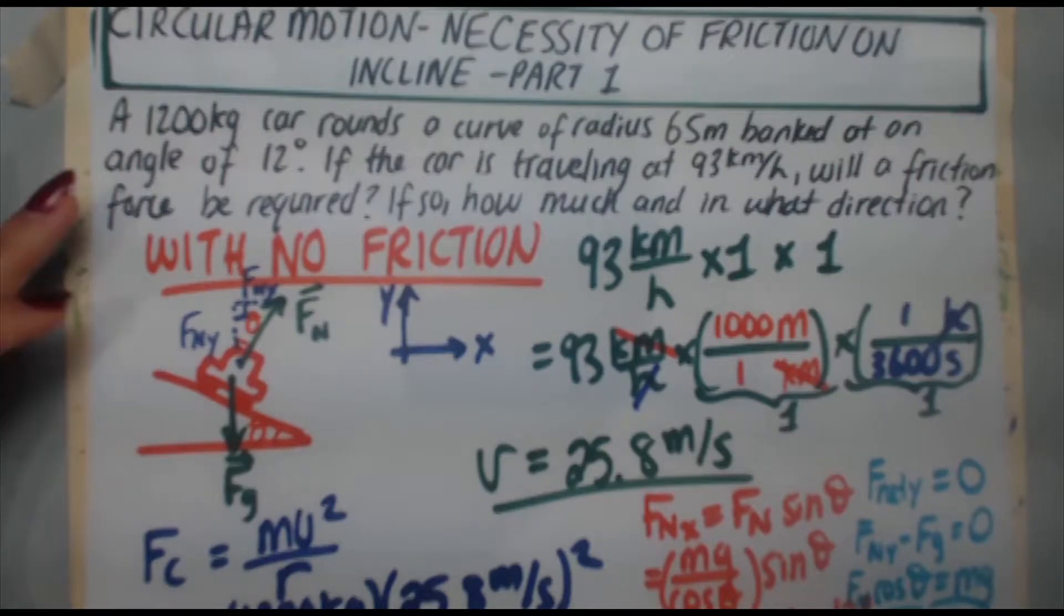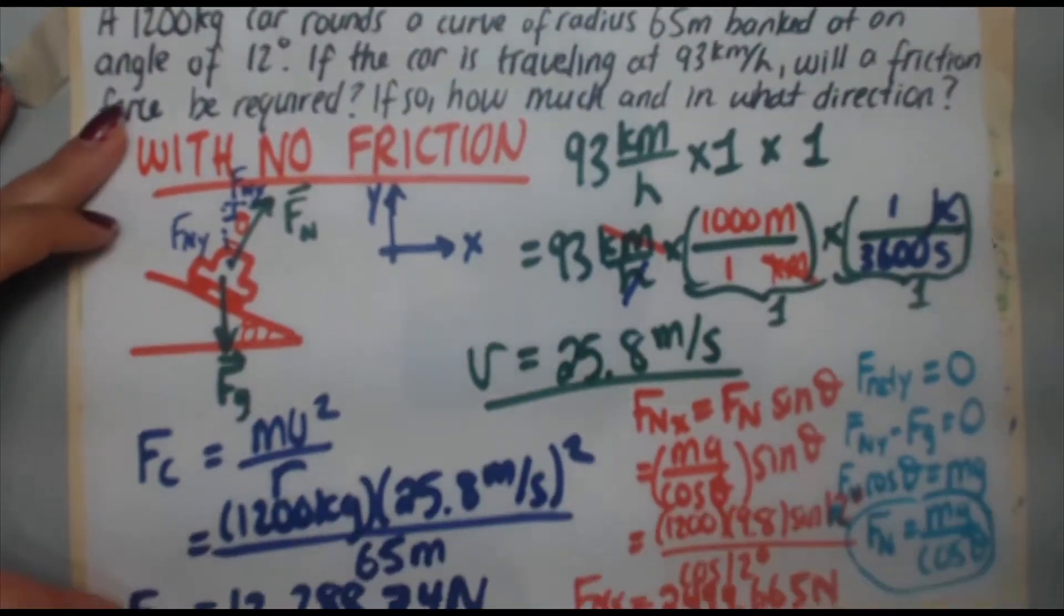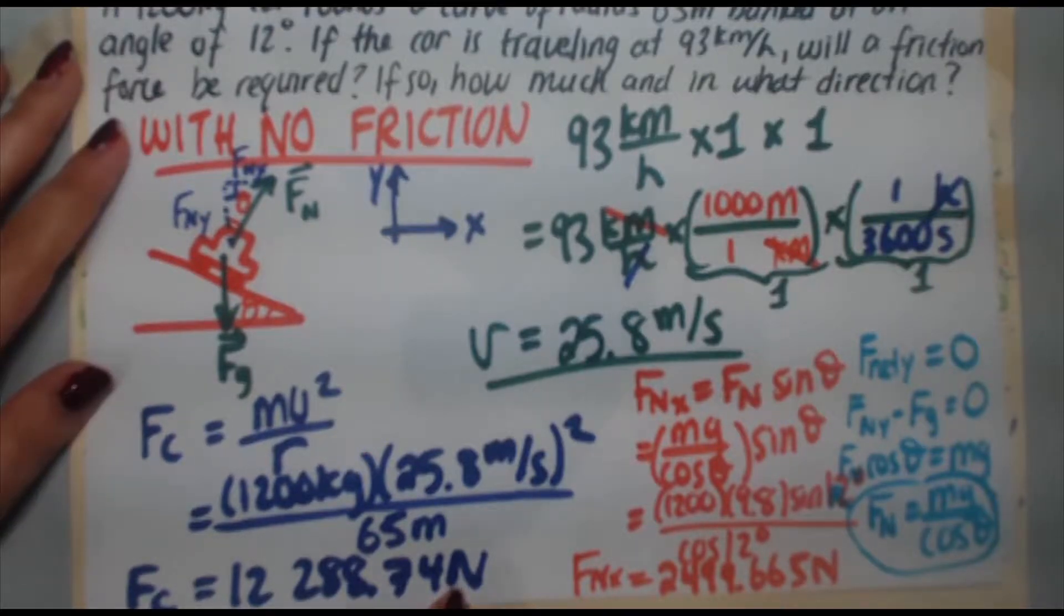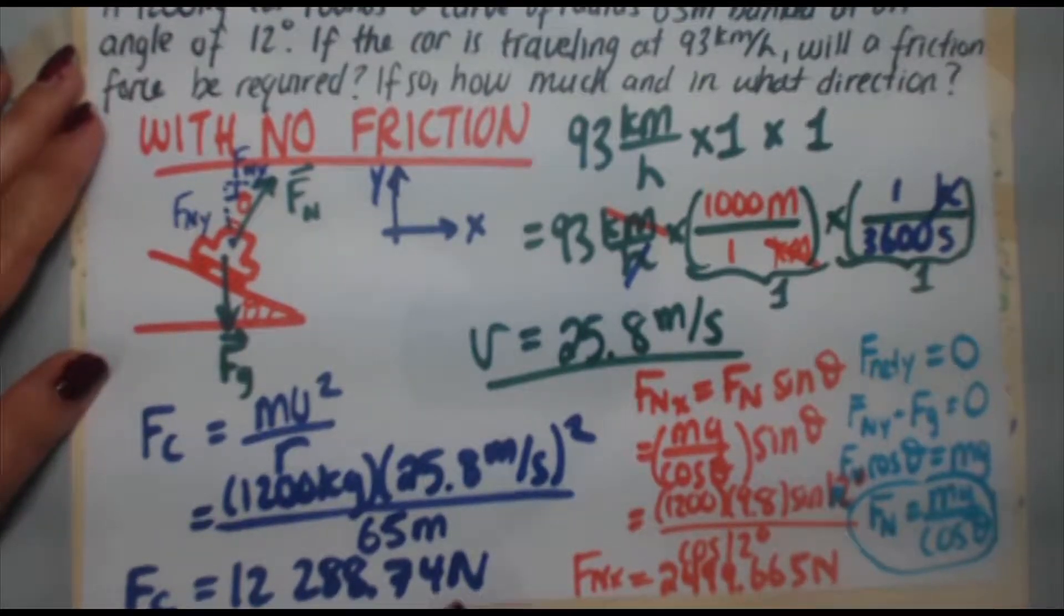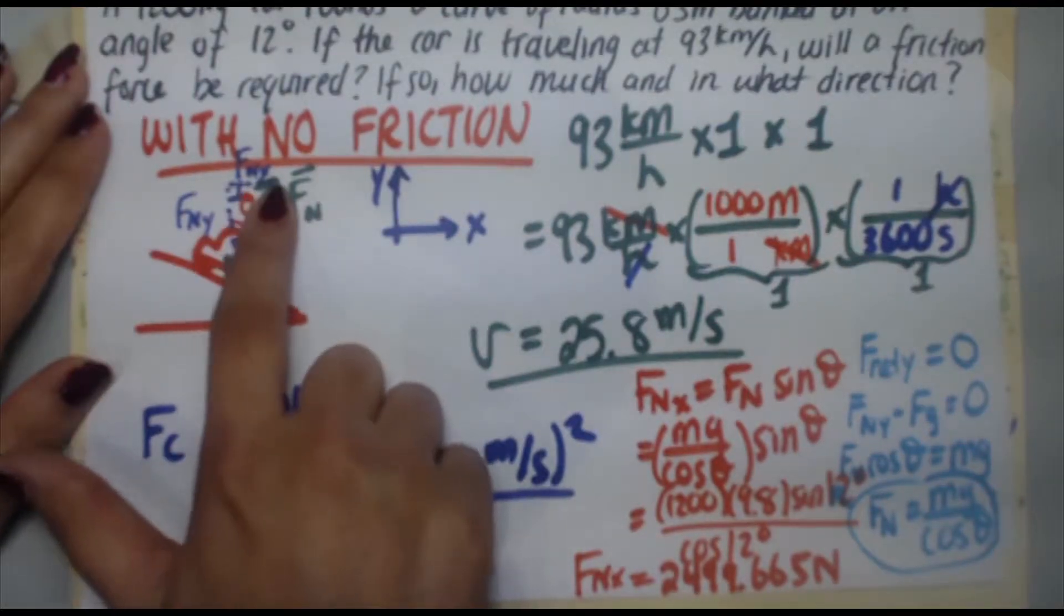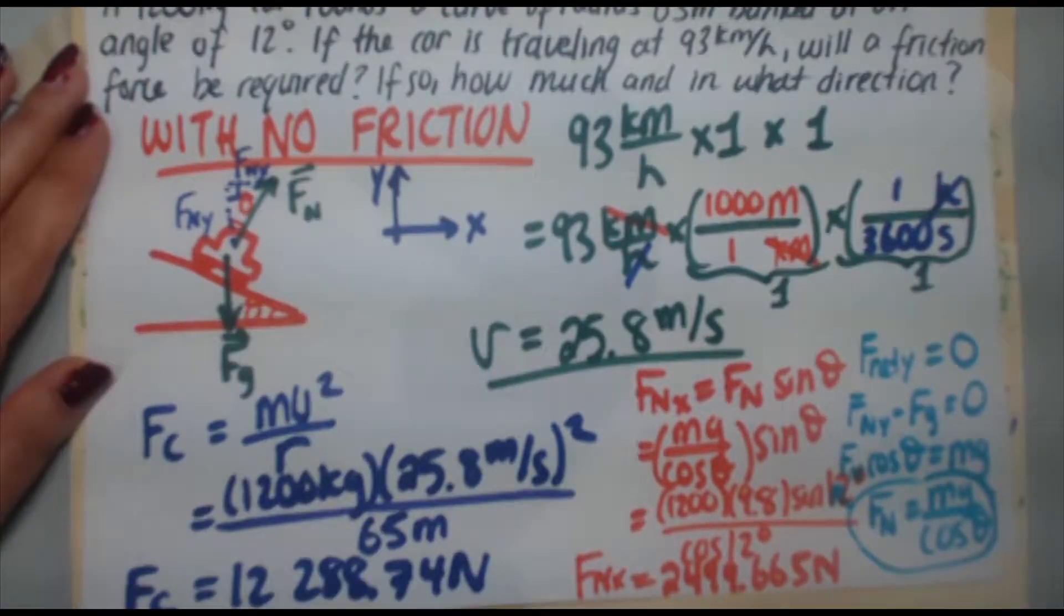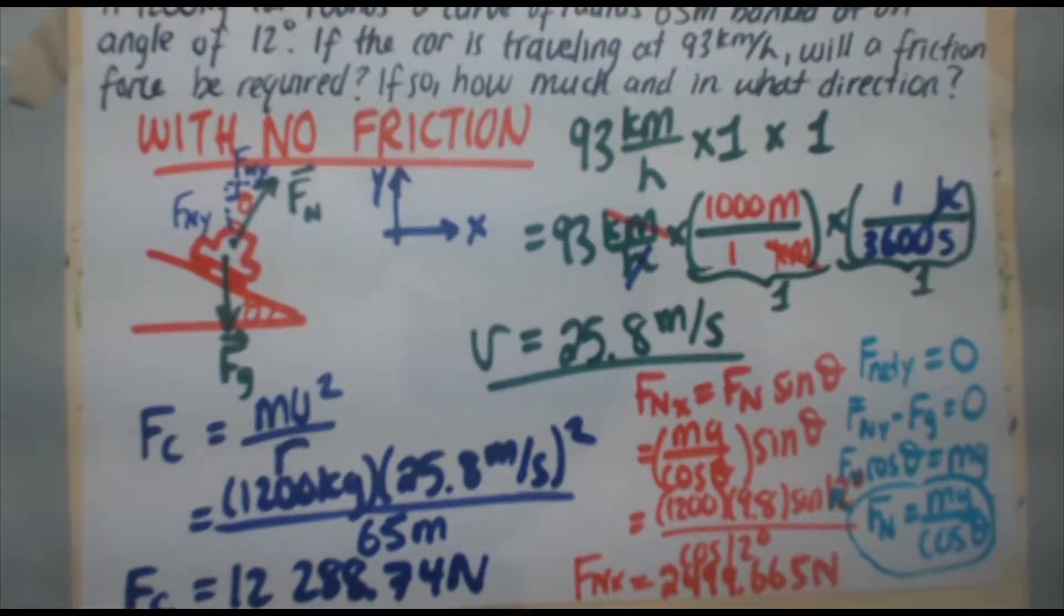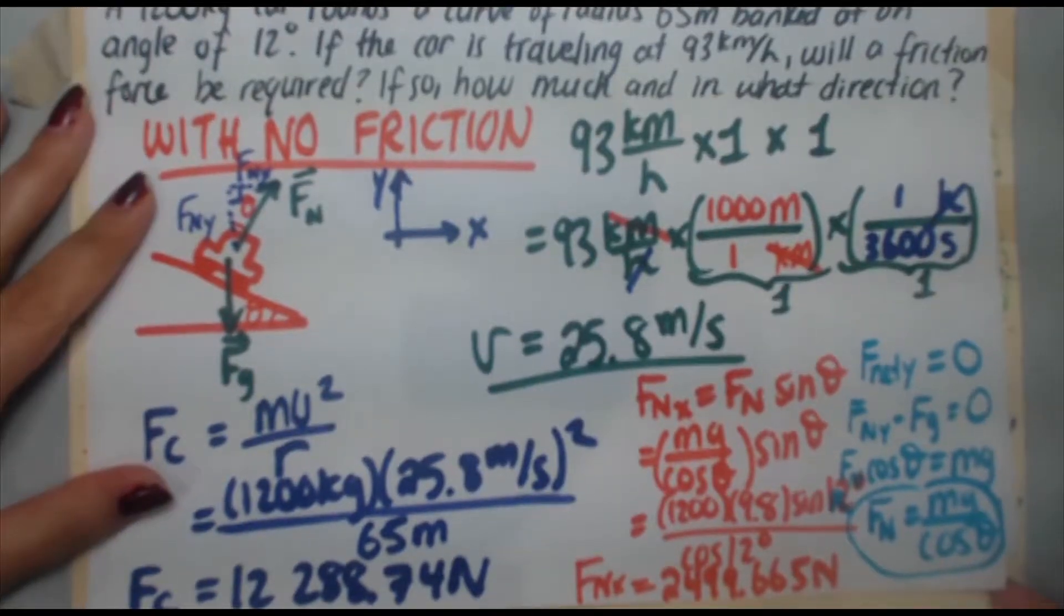In this question, we already looked at the case of no friction. We calculated the centripetal force. It was about 12,288 newtons. But in the x direction, if we ignore friction, the normal force in the x direction only amounted to 2,499. Clearly a lot less. So that means friction is a requirement and we are going to calculate how much that friction force is.